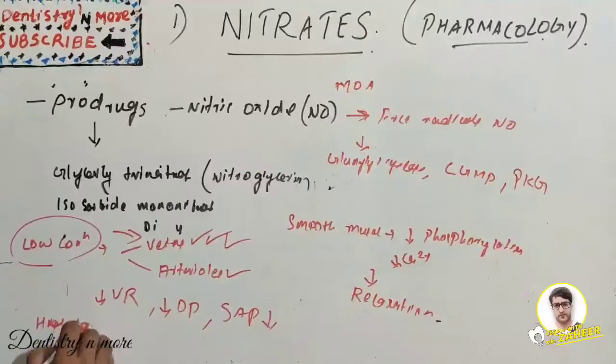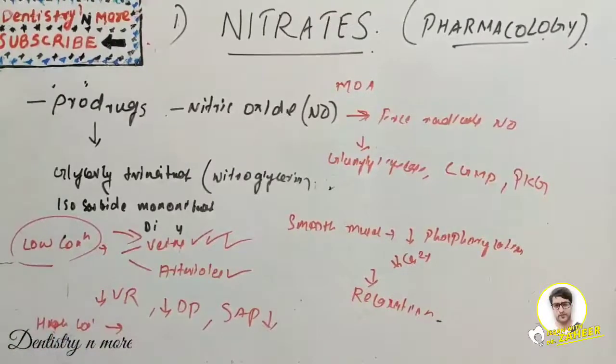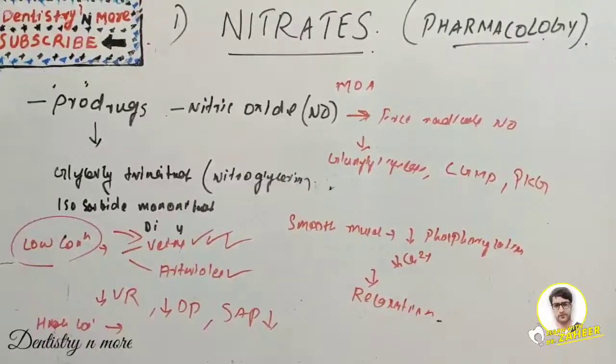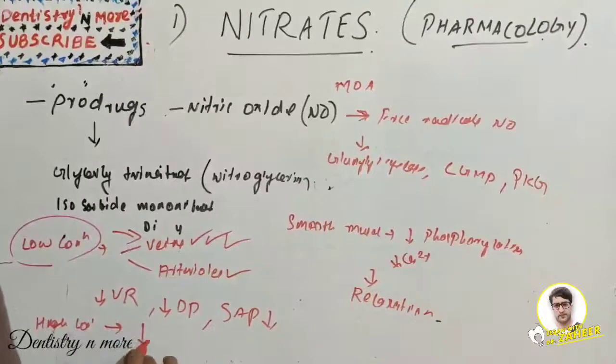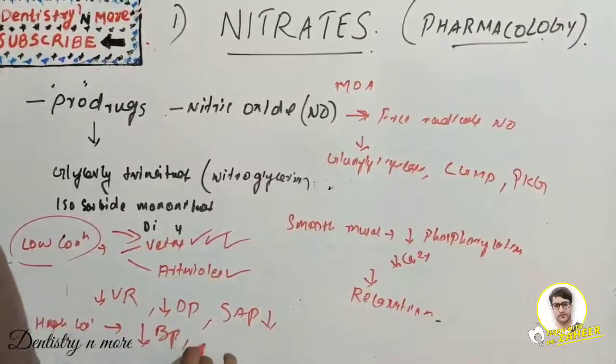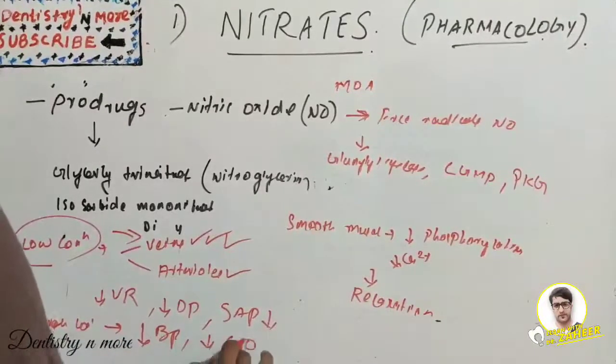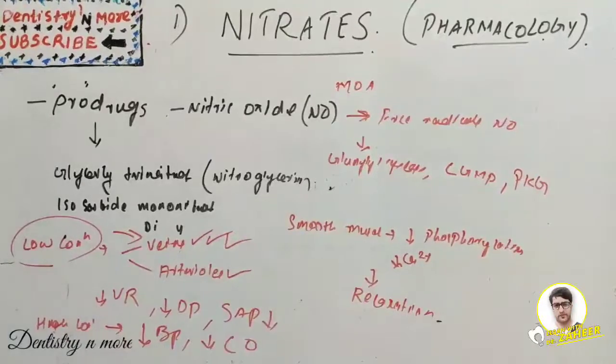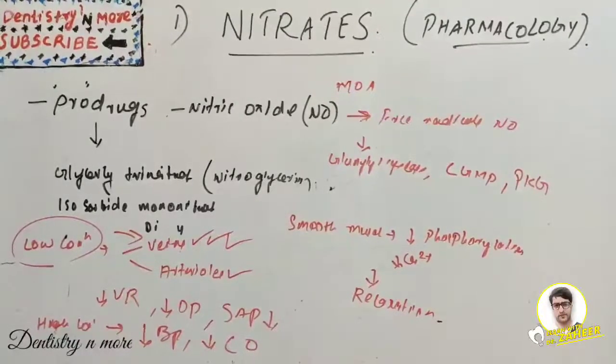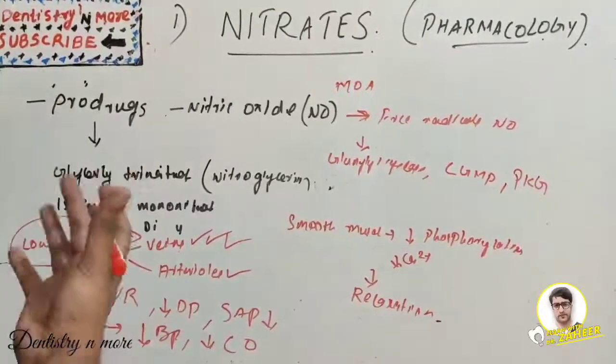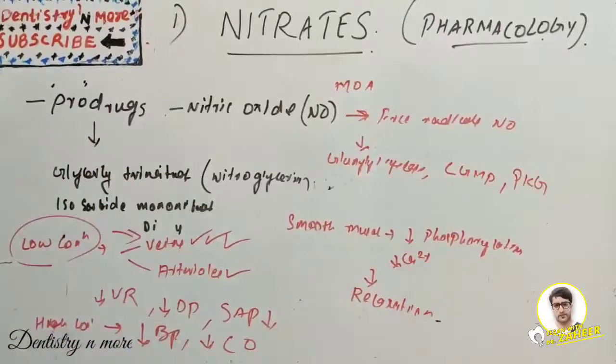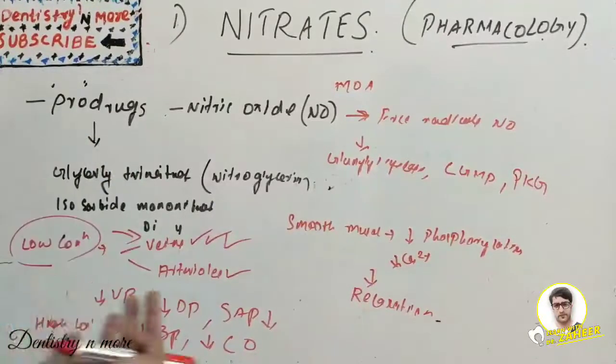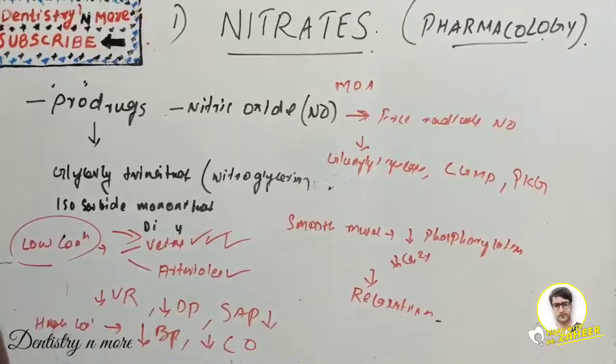Whereas with respect to high concentration, what happens is further venous pooling and it may decrease arterial resistance as well, thereby decreasing blood pressure and cardiac output. So it can cause pallor, weakness, dizziness, and activation of compensatory sympathetic reflexes.